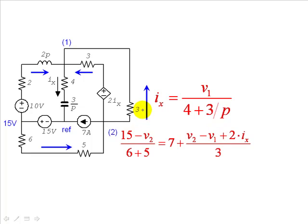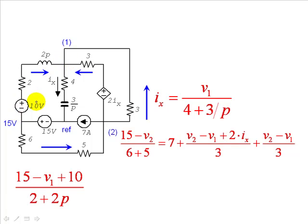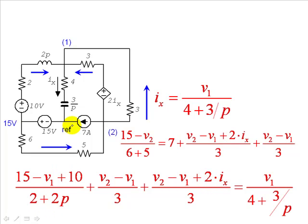That current is leaving. And last, the current in the 3 ohms resistor on the right. V2 minus V1 over 3, like so. And now, KCL for node 1, in here. Currents going in. This one. 15 minus V1 plus 10 volts divided by the impedance 2 plus 2P. Plus the current entering the same node from the right. V2 minus V1 over 3. Plus this current, which we already have seen.